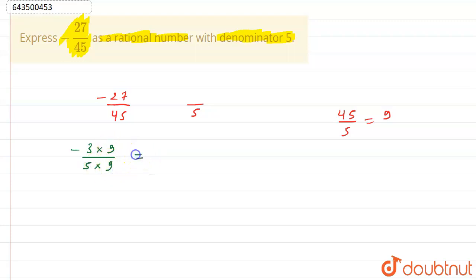So I can also write it as minus 3 upon 5 multiplied by 9 by 9, and 9 by 9 is nothing but 1. So this will come out to be as minus 3 by 5.